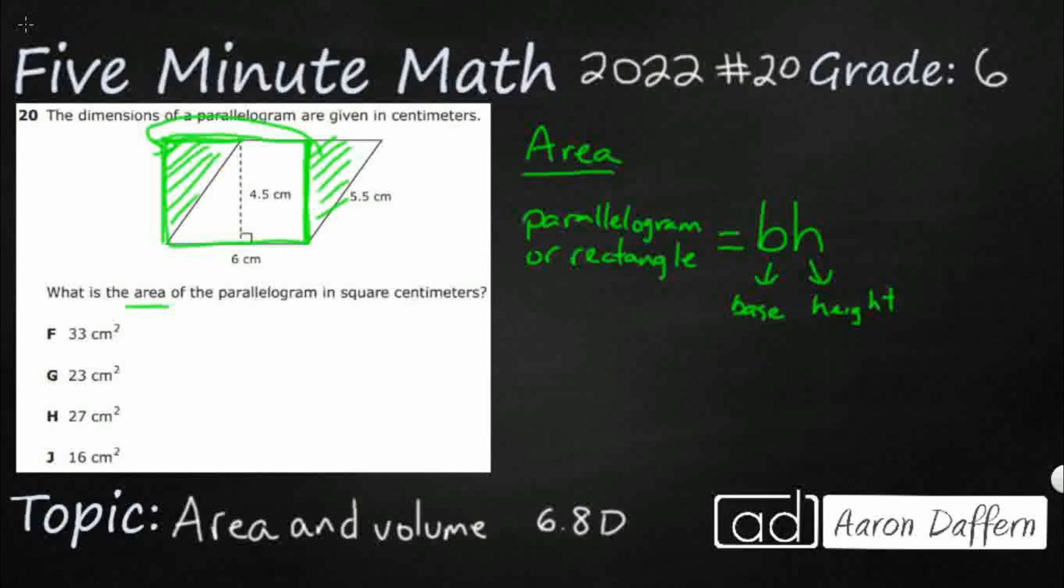So, step one is to find the formula, base times height, but the second tricky part, the base is easy, right? It's going to be six. The second tricky, and I say that with air quotes because it's not that tricky, what's the height? I've got two different measurements. Which one do I use?